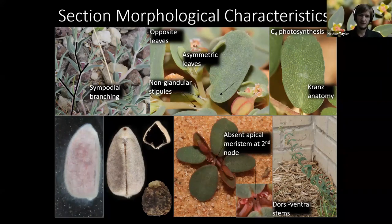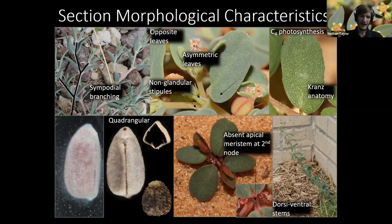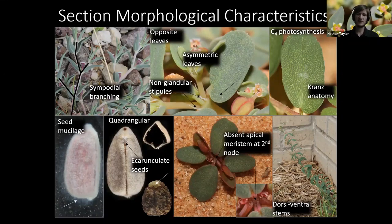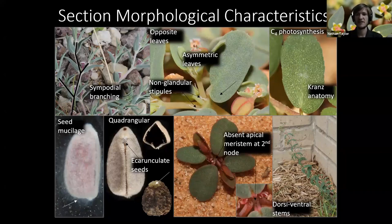These leaves are opposite, and in between each pair of opposite leaves you have non-glandular stipules — typically a pair of them, sometimes fused, sometimes separate. With the leaves you also get this nice mosaic pattern called Kranz anatomy, which is an indicator of C4 photosynthesis. Basically most of the chlorophyll is aggregated around the leaf veins. The seeds are typically quadrangular and lack a caruncle, and they are usually mucilaginous when wet. If you find a plant with three or more of these characteristics, you're probably safe in assuming it's section Anisophyllum.